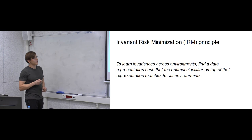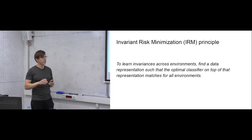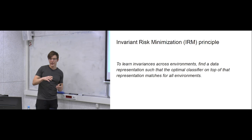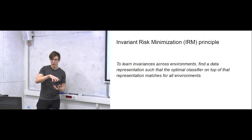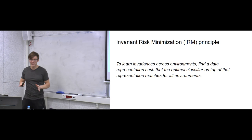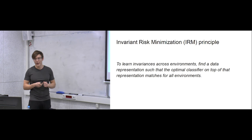Here we come to the spotlight of the paper: the Invariant Risk Minimization principle. It says that in order to learn invariant predictors, we need to find such a data representation that a classifier on top of that representation would be optimal in all environments at once. By the end of this talk I hope things will get more apparent.